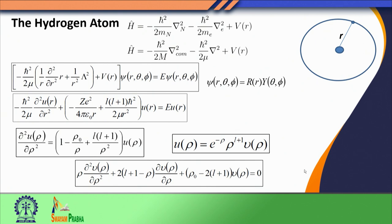If you remember, we discussed the hydrogen atom where one electron is going around the nucleus. We could write the Hamiltonian of the system as two kinetic energy operators, one corresponding to the nucleus, the other one corresponding to the electron, plus the potential energy of interaction between the two. The potential energy is expressed as the Coulomb interaction between the two charged particles, that is the electron and the nucleus.